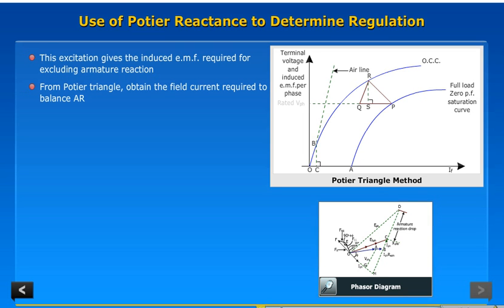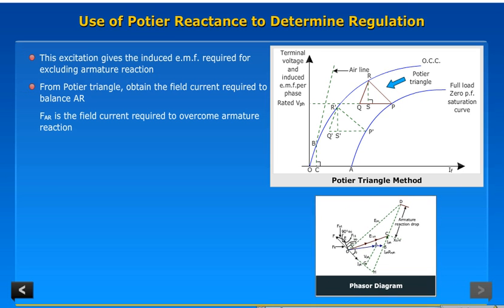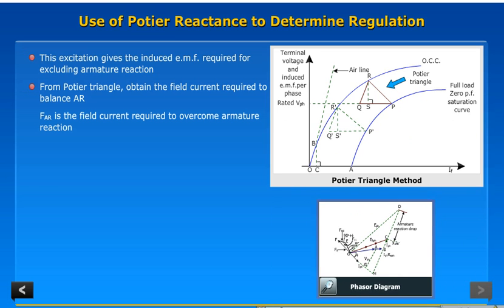From Potier triangle, obtain the field current required to balance AR. Phasor is the field current required to overcome armature reaction.